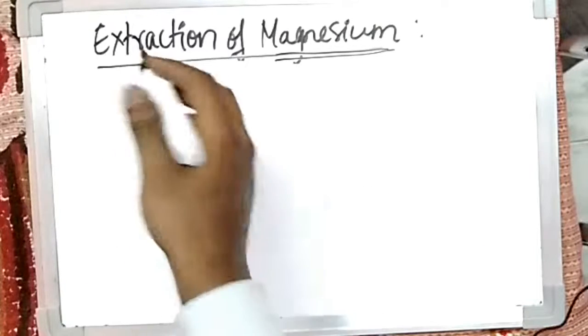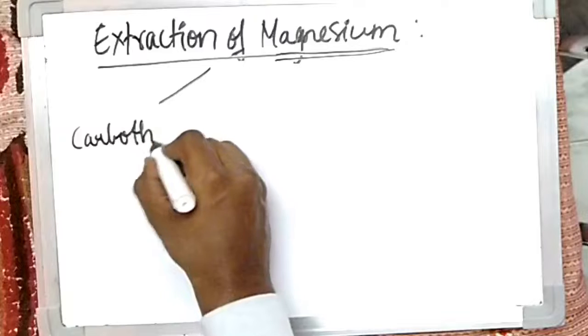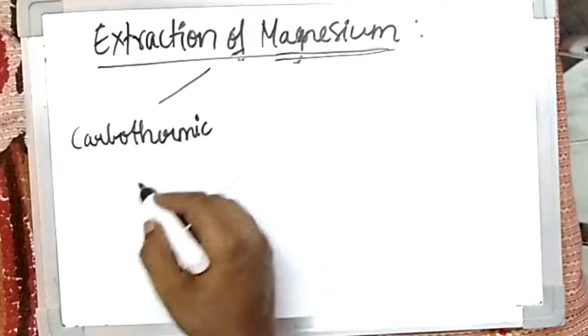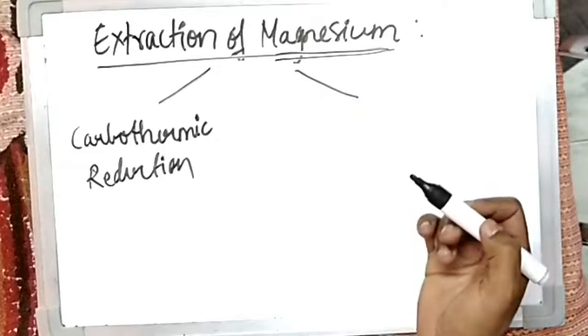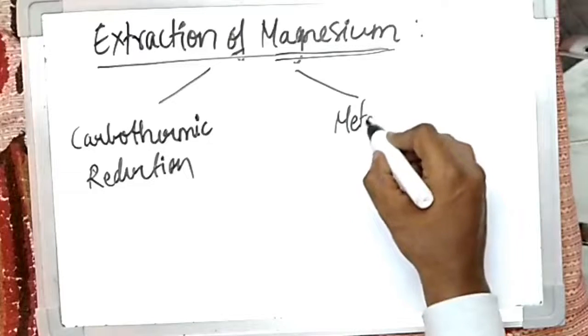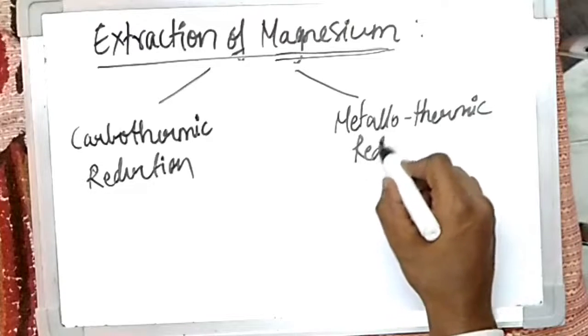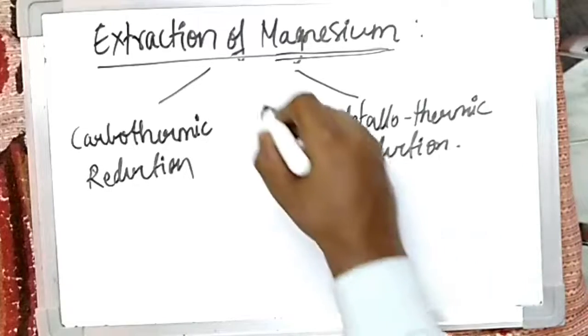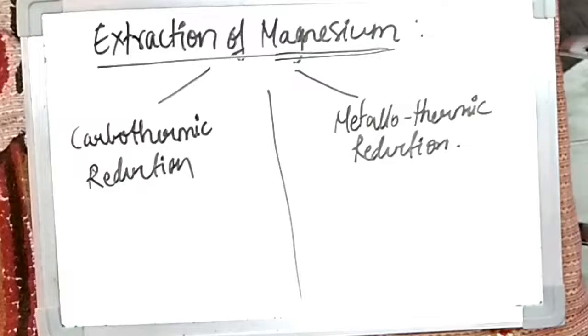Now we'll discuss how magnesium is extracted and the most economical approach. The extraction can be done in two different ways: the first is carbothermic reduction, and the other is metallothermic reduction. These are the two different methods of extracting magnesium.